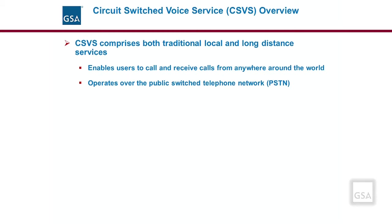That circuit remains in place for the exclusive use of the call's participants for the duration of the call. The EIS circuit-switched voice service, CSVS, enables an agency to call or receive calls from any phone in the U.S. or the world. It operates over the public-switched telephone network, PSTN.